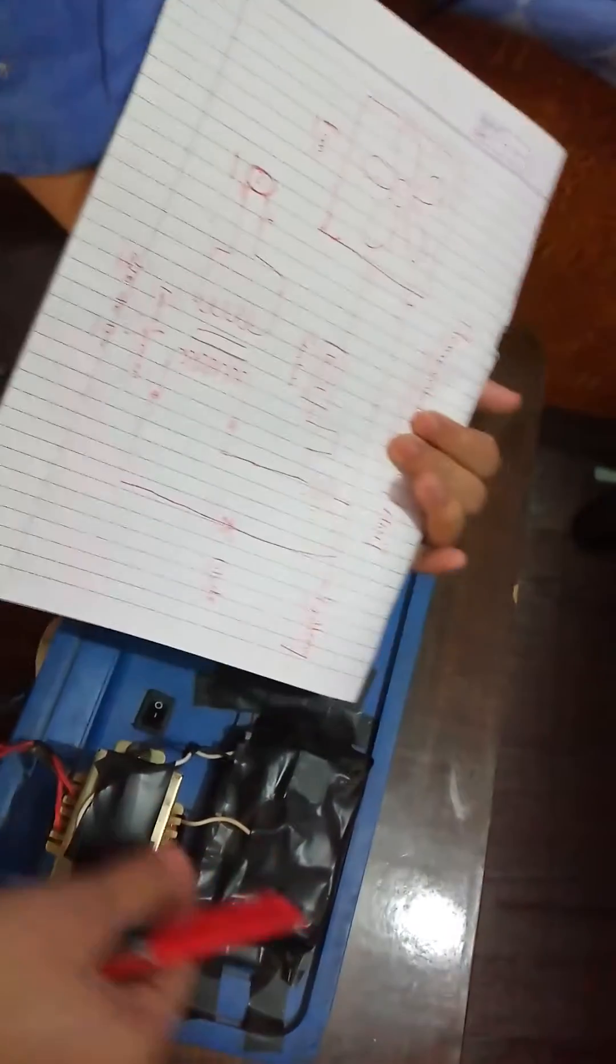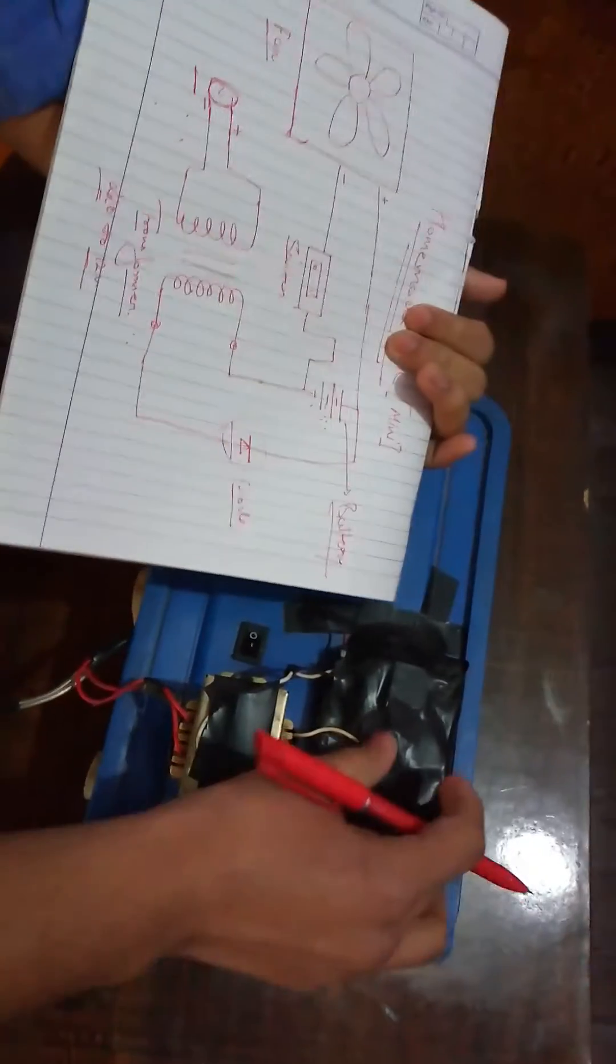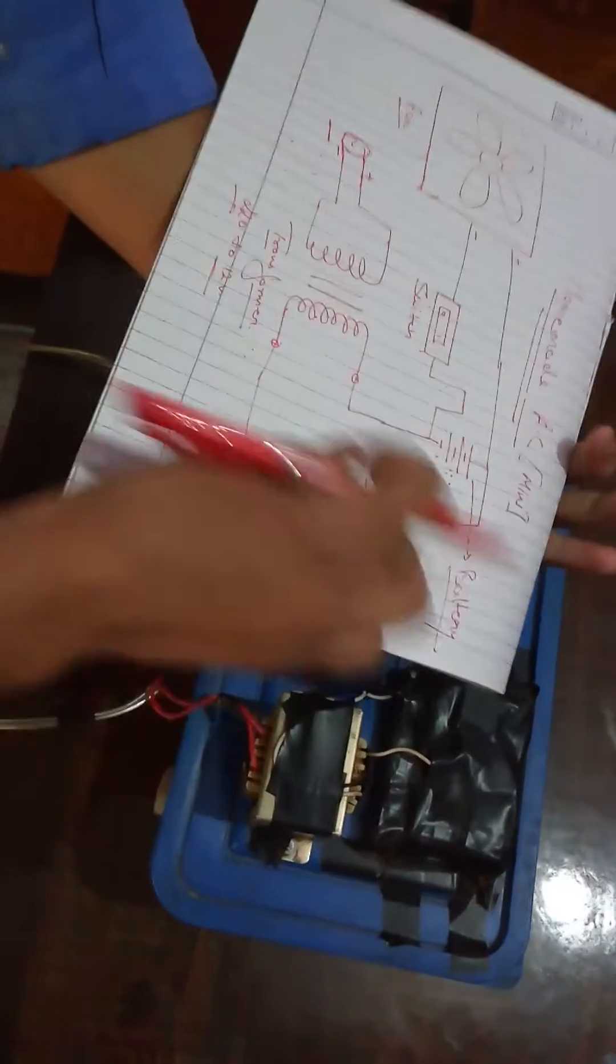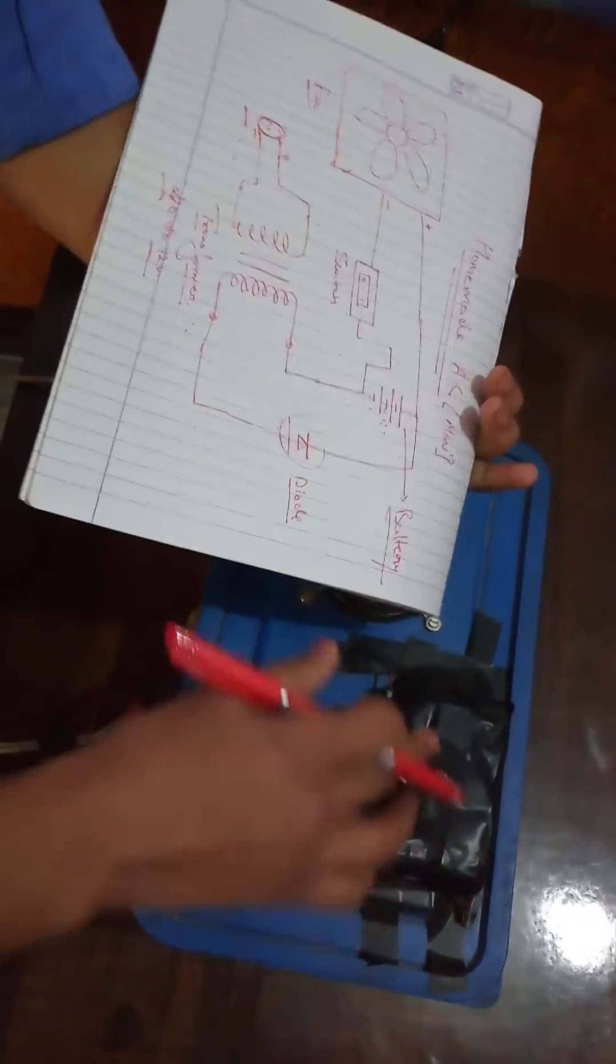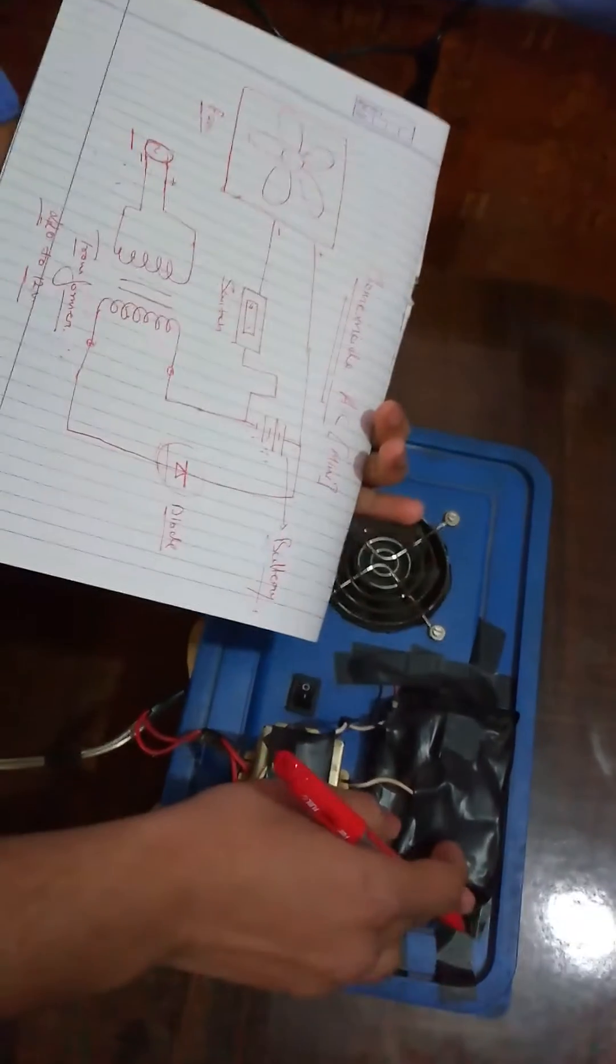As you can see we have connected our transformer with the battery. This is our transformer and battery. There is a diode, I can't show you the diode as it is in the black tape. You can introduce your diode between transformer and batteries. I hope you already understood which is the positive and negative terminal of the batteries.